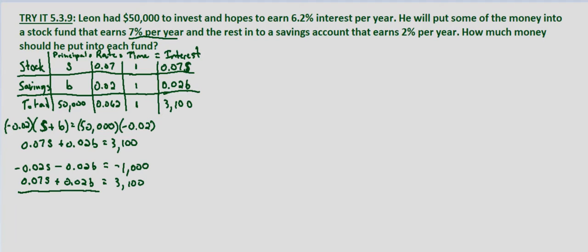Now we add the two equations to eliminate the B terms. Negative 0.02S plus 0.07S gives 0.05S. The B terms cancel: negative 0.02B plus 0.02B equals 0. And negative 1,000 plus 3,100 is 2,100. Dividing both sides by 0.05, we get S equals $42,000.